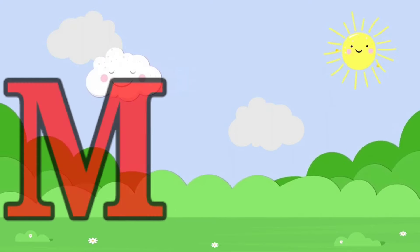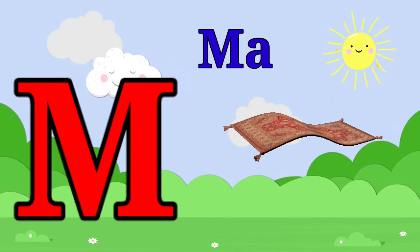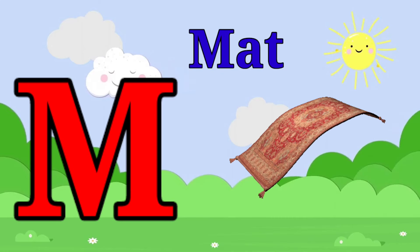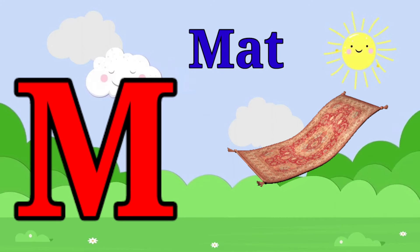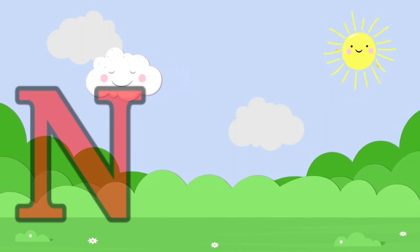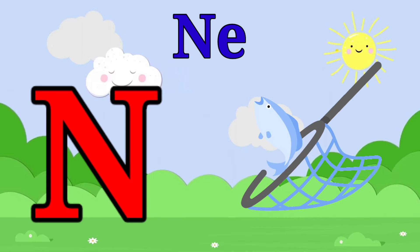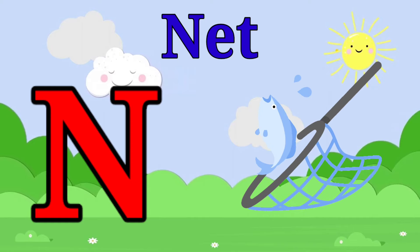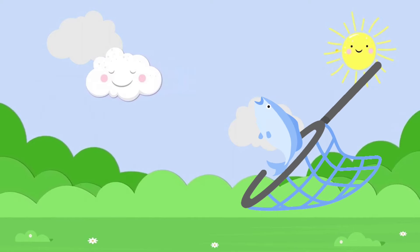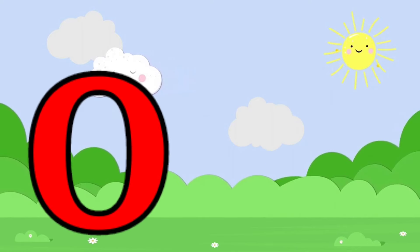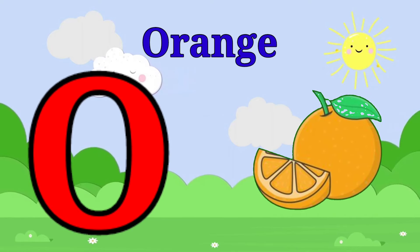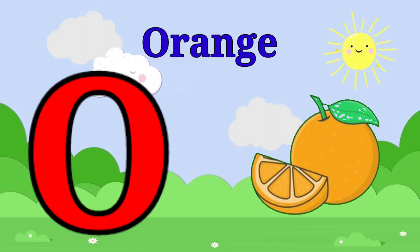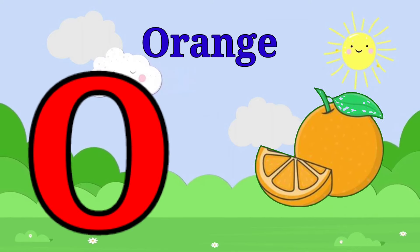M is for mat, m-m-mat. N is for net, n-n-net. O is for orange, o-o-orange.